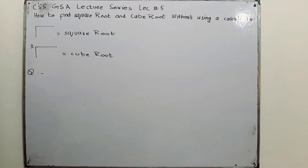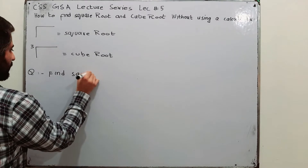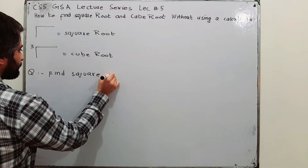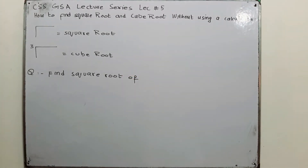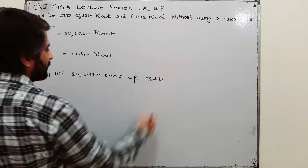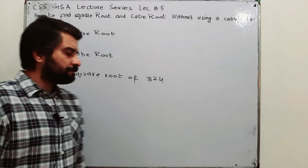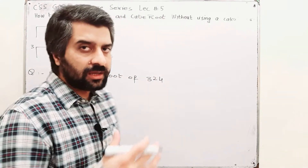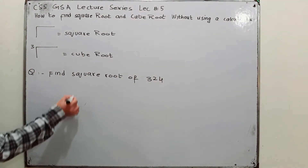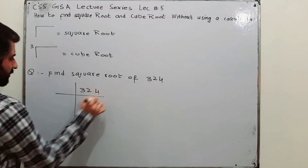Let me elaborate the process of finding the square root and cube root, then I will come to a real life example. If I give you the question: find the square root of 324 without a calculator, we are going to adopt the process of prime factorization. We will find the prime factors of 324 and then write them in square form. Just do prime factorization of 324.